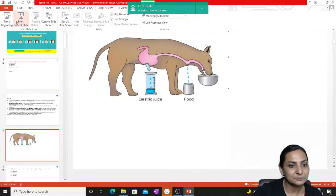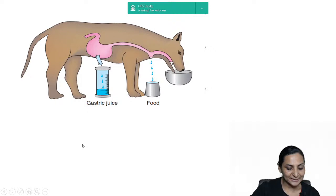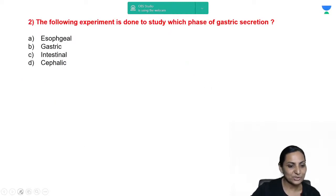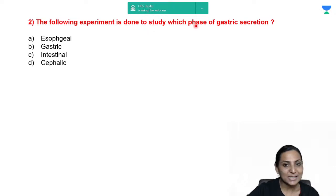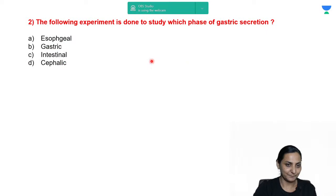Next question: the following experiment is done in dogs to study which phase of gastric secretion? The dog is given food, but an esophageal fistula is created so that whatever food the dog eats does not enter the stomach, and there is collection of gastric juice. What phase are we studying — esophageal, gastric, intestinal, or cephalic?